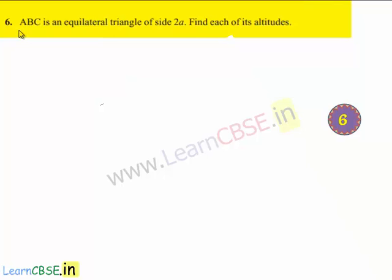Moving on to the sixth sum, given that ABC is an equilateral triangle of side 2a, find each of its altitudes.